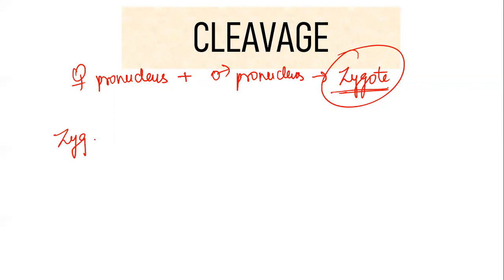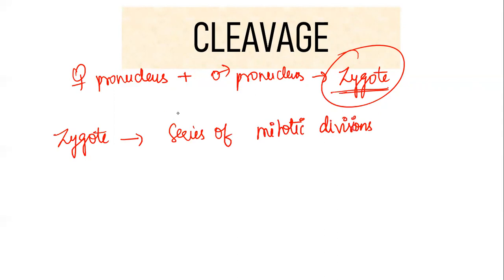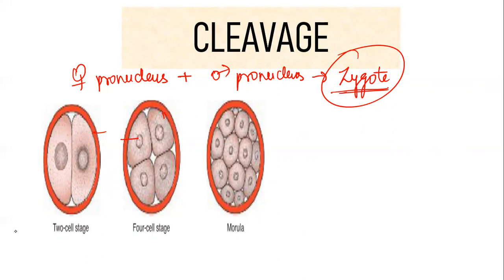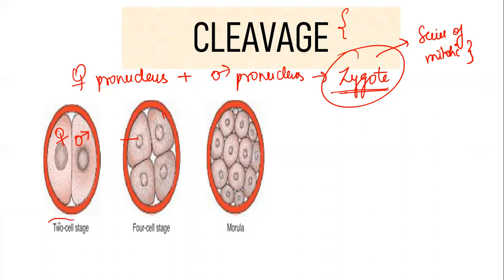Once the zygote is formed, it undergoes a series of continuous mitotic divisions called cleavage — successive mitotic divisions of the zygote. Starting from the zygote, it undergoes division to form a two-cell stage, then continues to four-cell stage after three mitotic divisions, then eight-cell stage. Up through the eight-cell stage, all cells are loosely arranged.